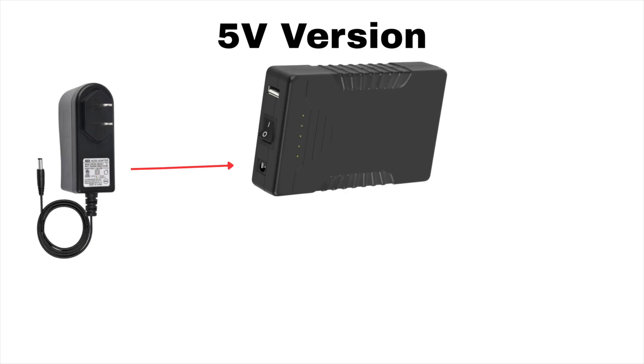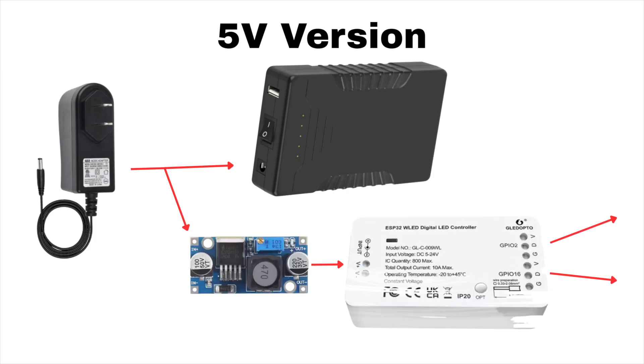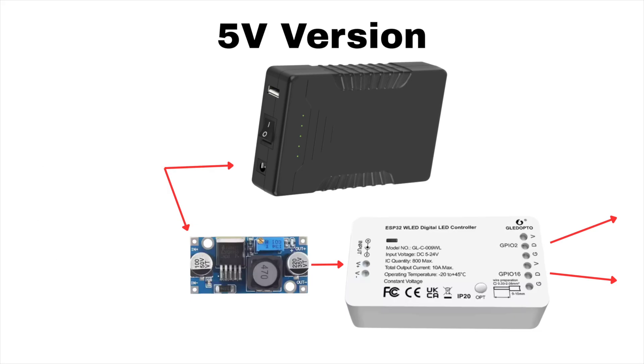For a 5 volt system, we introduce a buck converter between the battery and the GLEDOPTO to step the voltage down from 12 volts to 5 volts. Once connected, the GLEDOPTO distributes regulated power to the lighting system. If the external power supply is removed, the battery seamlessly takes over, maintaining a stable 5 volt operation across the entire setup.